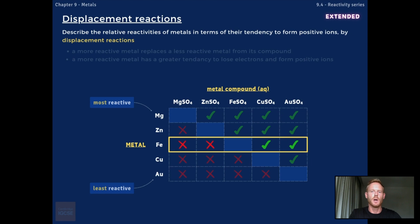Iron displaces copper and gold but does not displace magnesium or zinc, and gold does not displace magnesium, zinc, iron or copper because all these metals are above gold in the series.